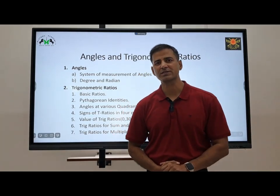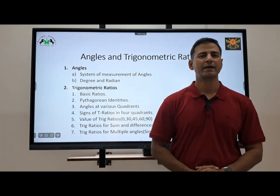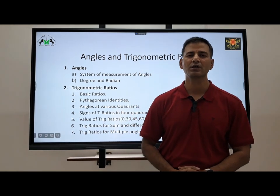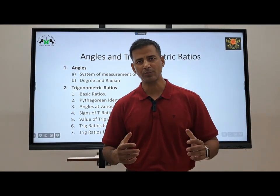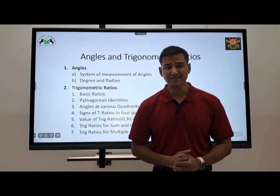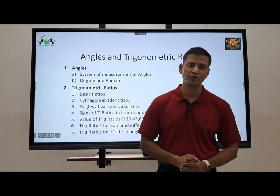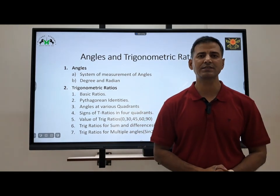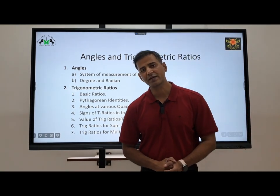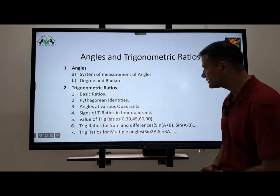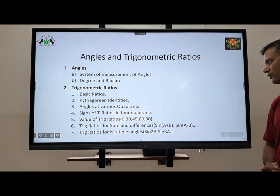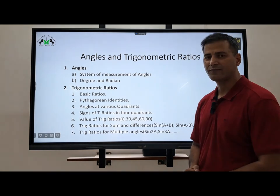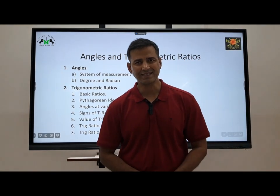Good morning gentlemen, welcome to Mustang Academy. In today's chapter we'll be studying about angles and trigonometrical ratios. We'll study about system of measurement of angles, degrees and radians, trigonometrical ratios, basic ratios, Pythagorean identities, angles at various quadrants, sign of trigonometrical ratios, the four quadrants, value of trigonometrical ratios, trigonometrical ratios for sum and differences, and trigonometrical ratios for multiple angles. So let's begin our class.